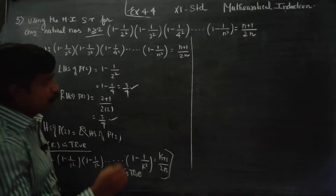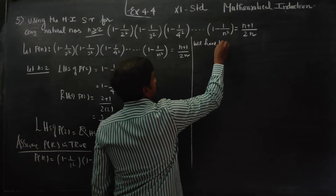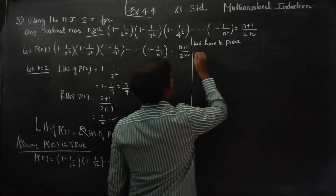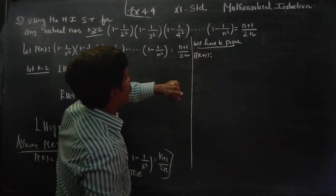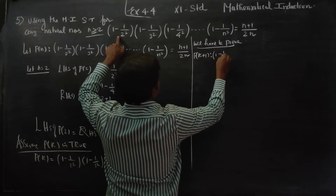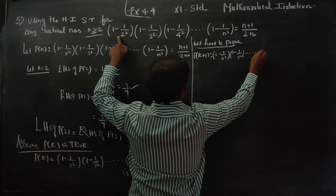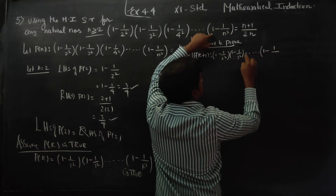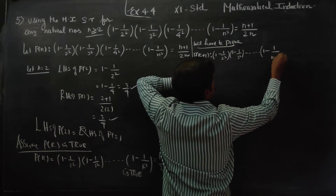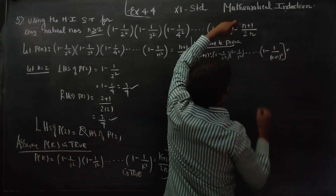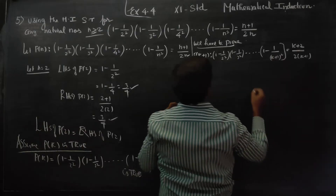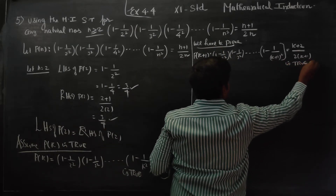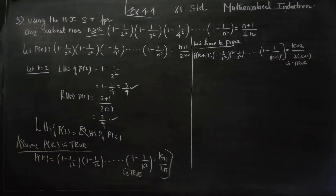Now we have to prove P of k plus 1. This is the last stage. We have to prove P of k plus 1: 1 minus 1 by 2 square, 1 minus 1 by 3 square, dot dot dot, 1 minus 1 by k plus 1 whole square is equal to k plus 2 by 2 into k plus 1. We have to prove this is true.